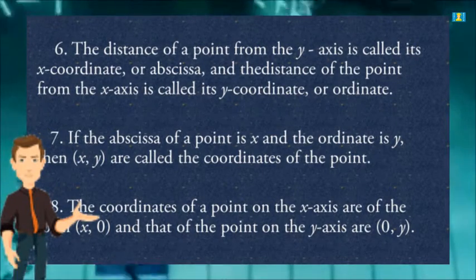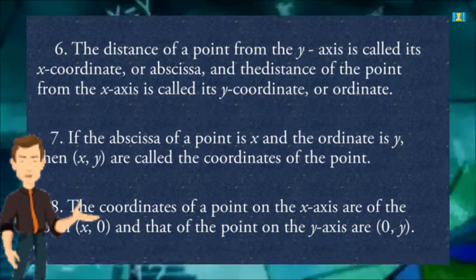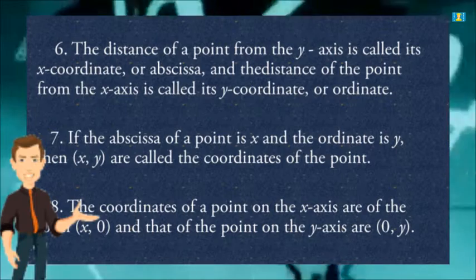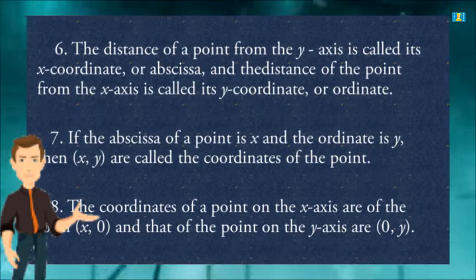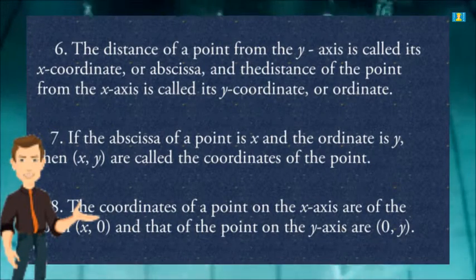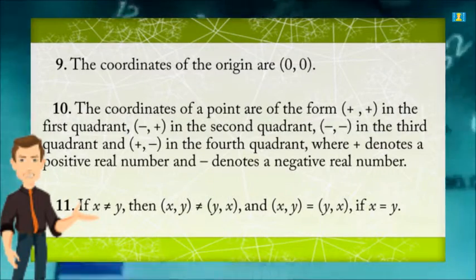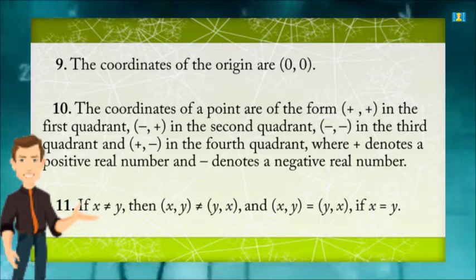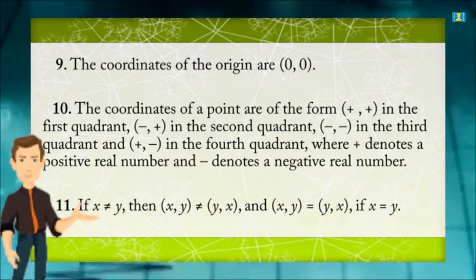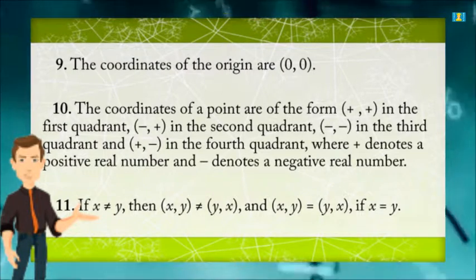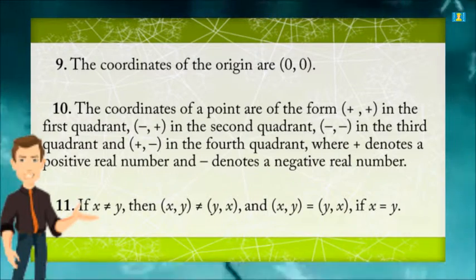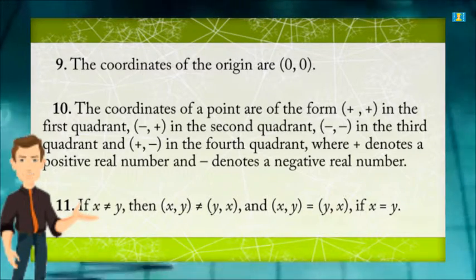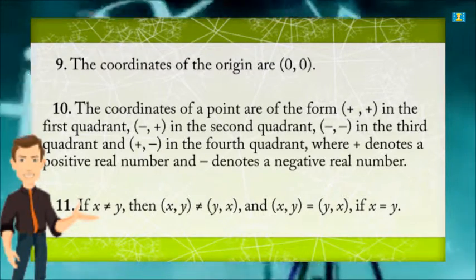The distance of a point from the x-axis is called its y-coordinate or ordinate. If the abscissa of a point is X and the ordinate is Y, then (X,Y) are called the coordinates of the point. The coordinates of a point on the x-axis are of the form (X, 0), and on the y-axis are (0, Y). The coordinates of the origin are (0, 0). The coordinates of a point are (positive, positive) in the first quadrant, (negative, positive) in the second, (negative, negative) in the third, and (positive, negative) in the fourth quadrant. If X ≠ Y, then (X,Y) ≠ (Y,X); and (X,Y) = (Y,X) if X = Y. Thank you.